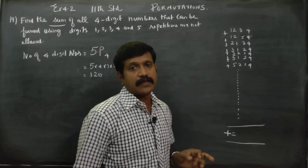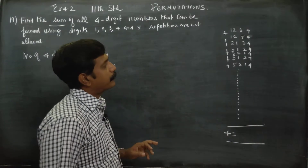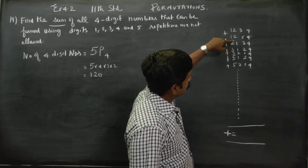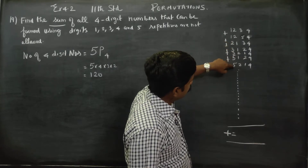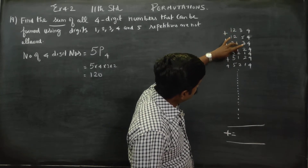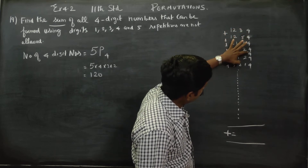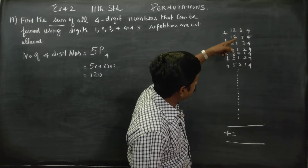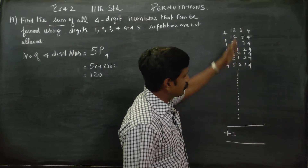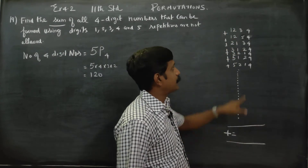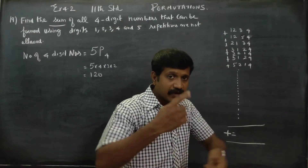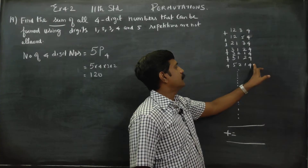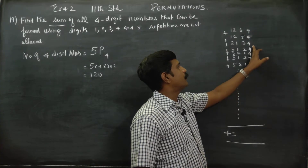Now consider how many times each digit appears in each place. Since there are 120 numbers formed from 5 digits taken 4 at a time, each digit (1, 2, 3, 4, 5) appears equally in each position. The number of times each digit appears in any given place is 120 ÷ 5 = 24 times.